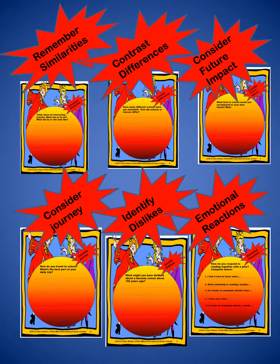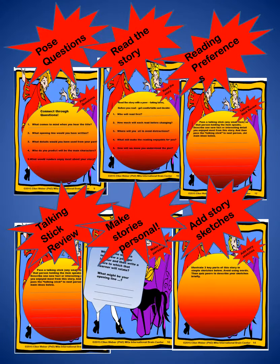They'll consider similarities, they'll look at contrasting differences, they'll consider the future impact of some of the revelations in the story and consider a journey themselves to school and how that differed. They'll identify dislikes and consider emotional responses. Graphic organizers for each of these possibilities allow students to relate literature to their personal experiences. They'll pose questions, read the story with student-led questions, add story sketches, and make stories personal by retelling a story to a younger reader.